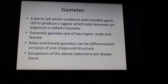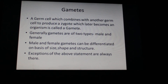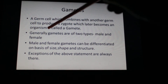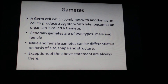Let's see how gametes are formed. What are gametes? Gametes are germ cells. You must know there are somatic cells and germ cells. A germ cell combines with another germ cell and produces a zygote, and the zygote grows into an organism. This germ cell is called a gamete.